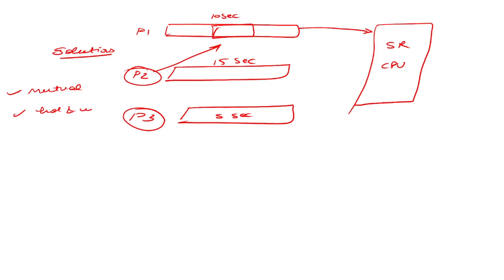The critical section refers to a segment of code where processes access shared resources such as common variables and files, and perform read operations on them. Since processes execute concurrently, any process can be interrupted mid-execution.